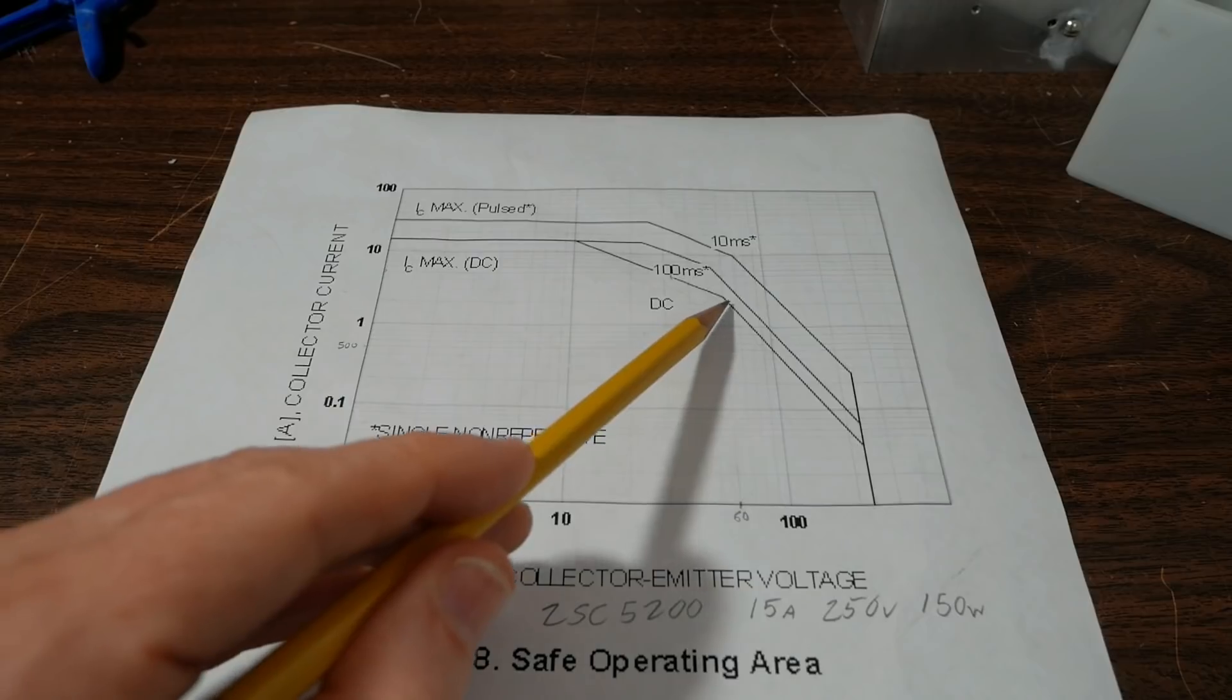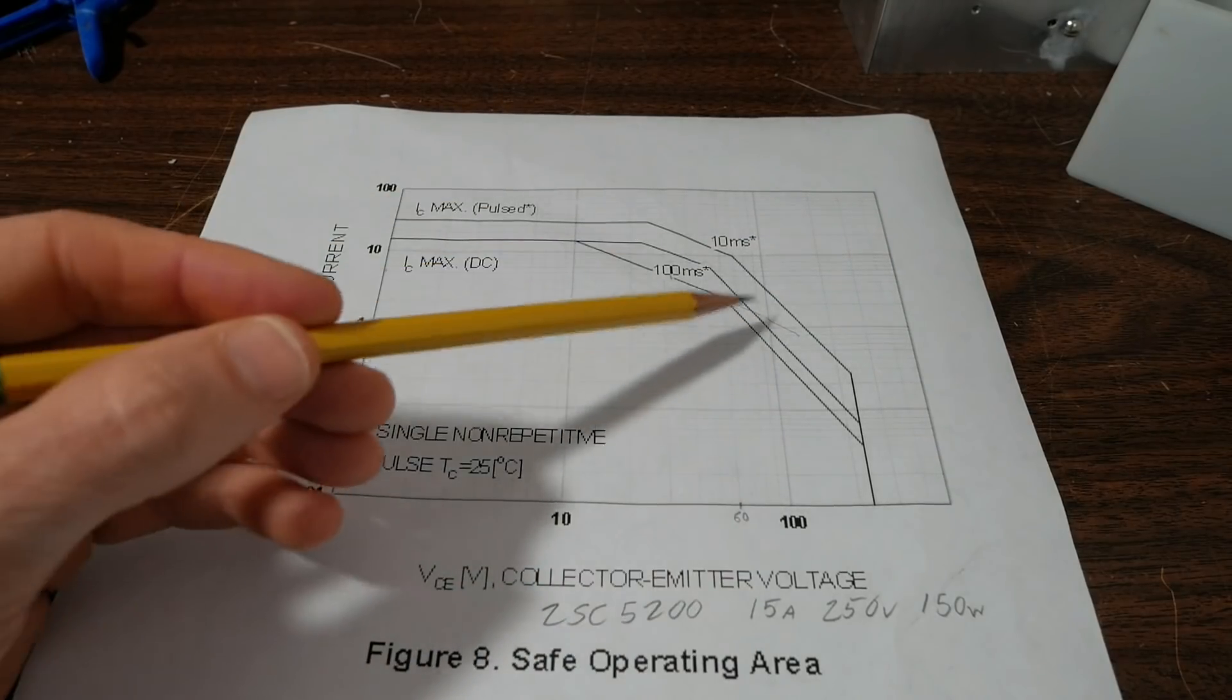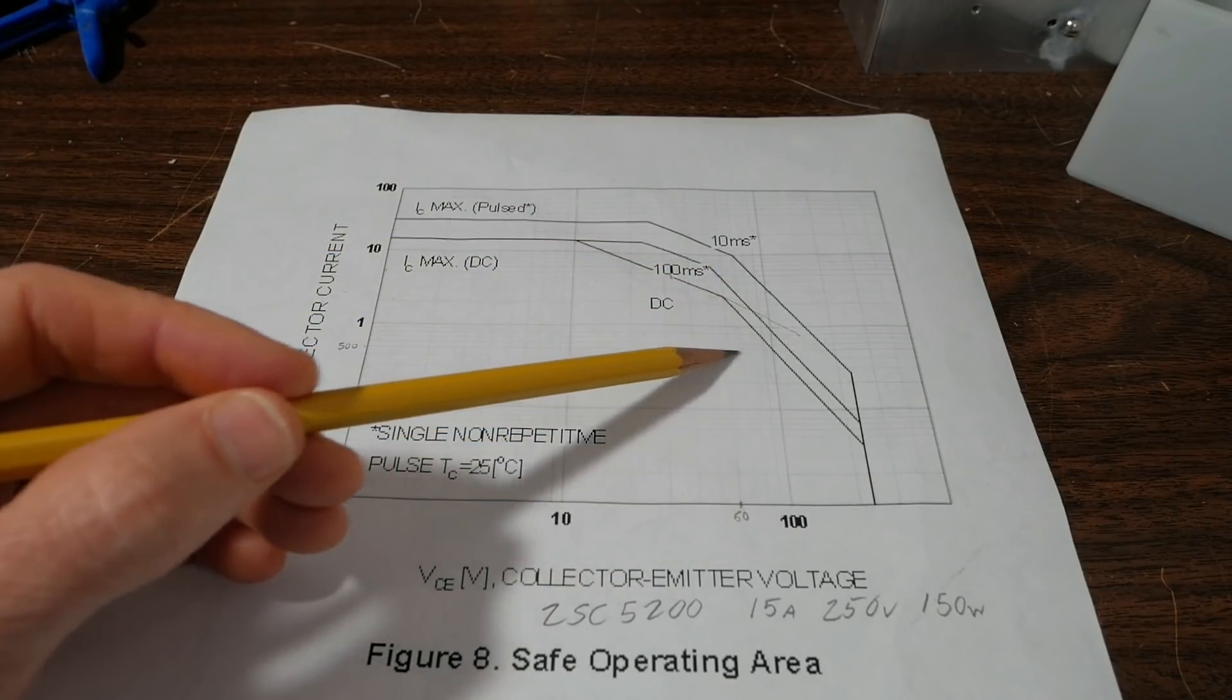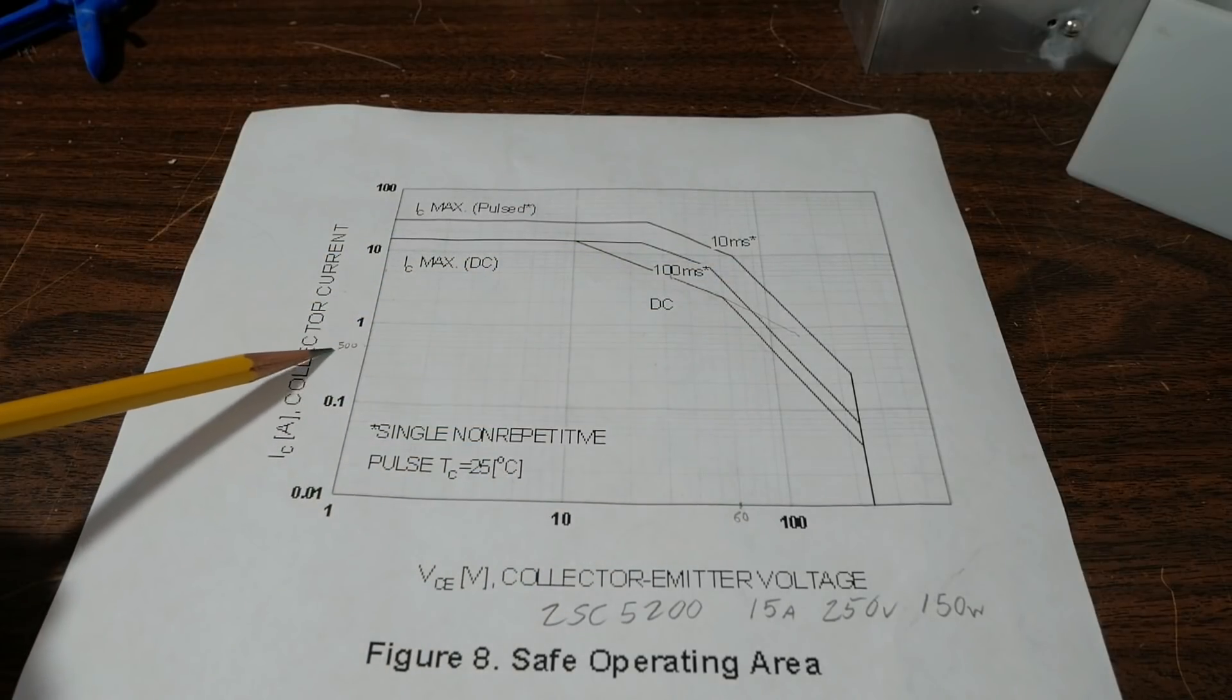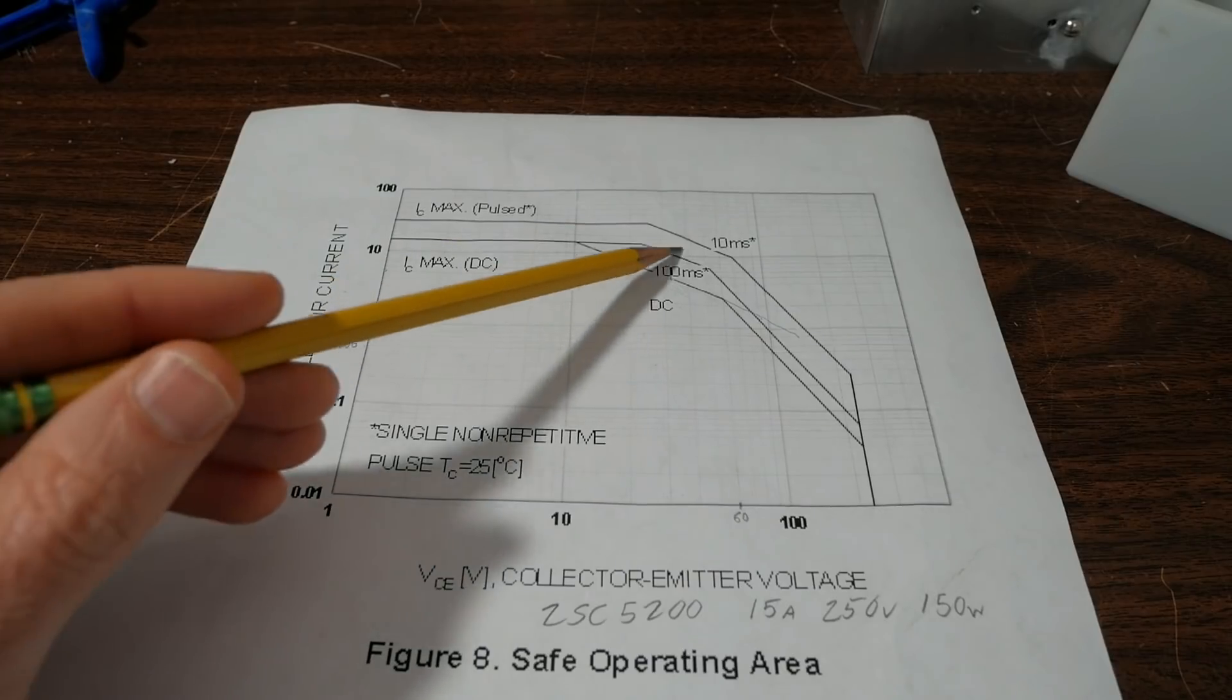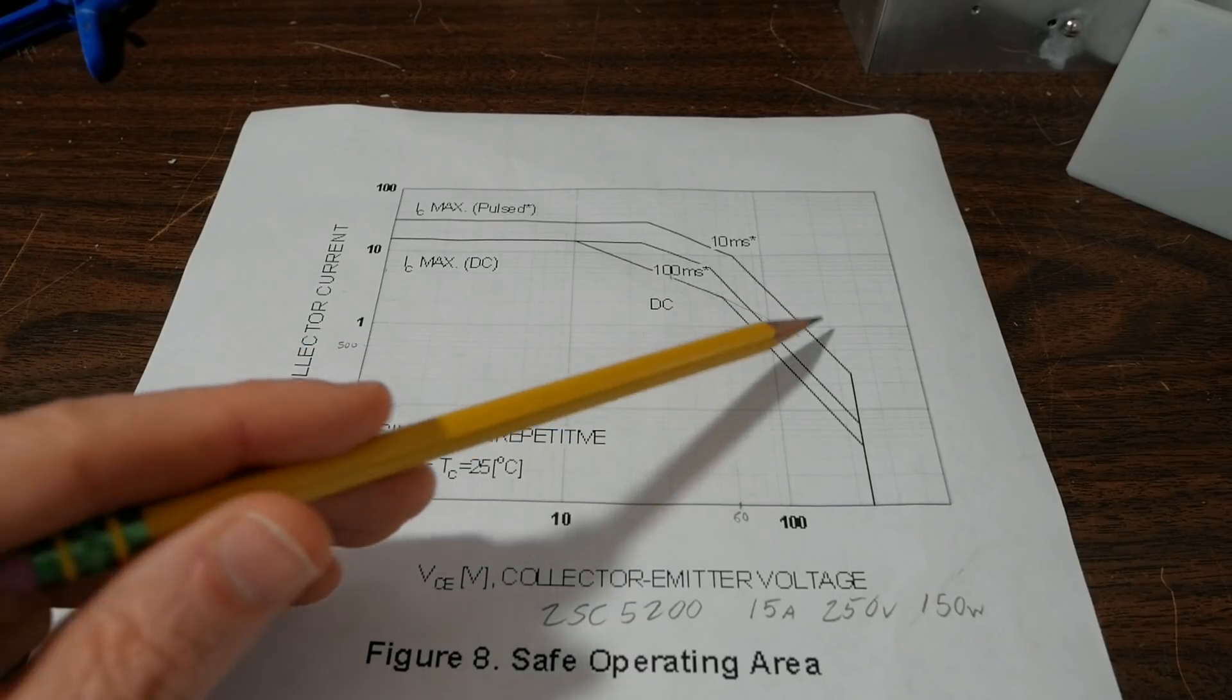And if this line continued straight, that's what it would cross, about an amp and a half. However, if you look here, it actually is at one third the value, only 500 milliamps. That's important because you get a 150 watt 15 amp transistor doesn't mean you can put that kind of current through it at all these conditions. So you have to be aware of the maximum power dissipation and secondary breakdown conditions.